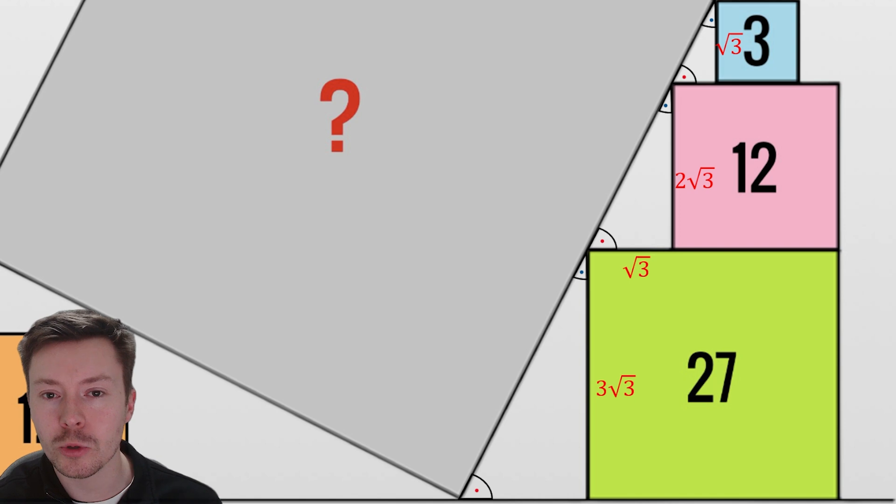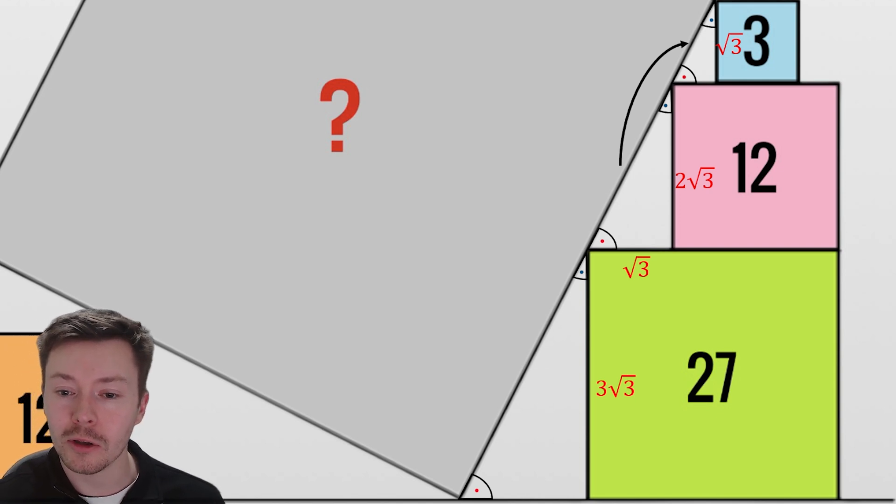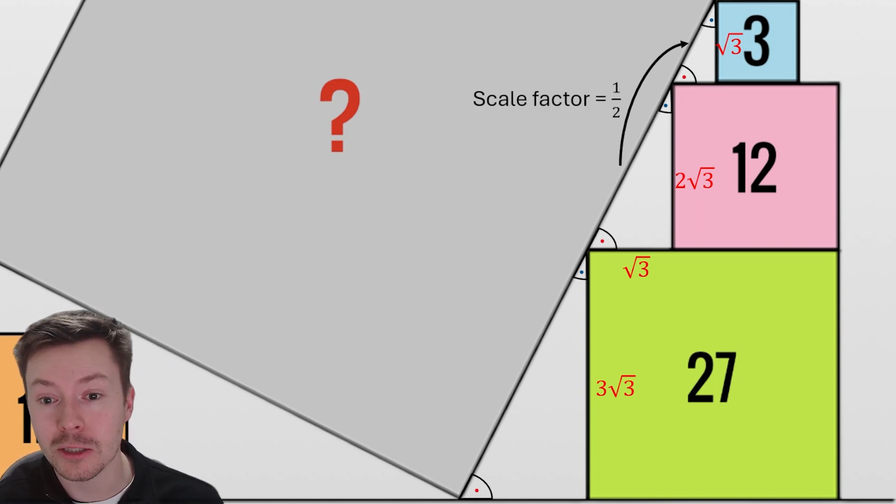Because these triangles are all at the same angles, we've got similar triangles here and we can use a scale factor to work out the base of the other two triangles. Going from the medium triangle to the small triangle, from 2√3 to √3, I times it by a half, so my scale factor is a half.